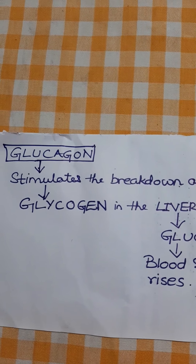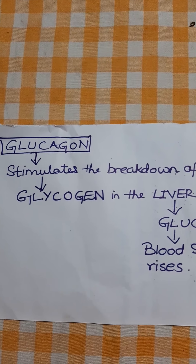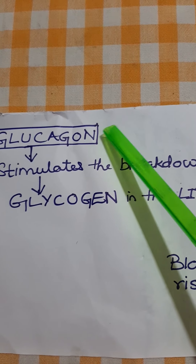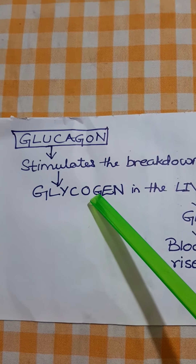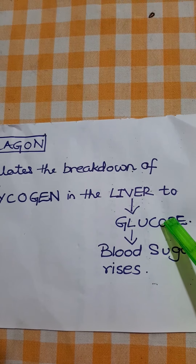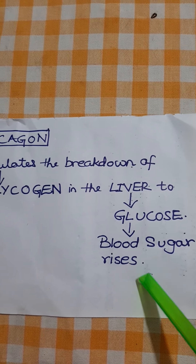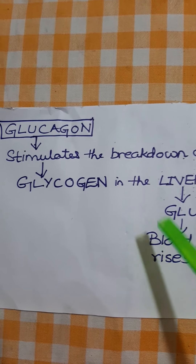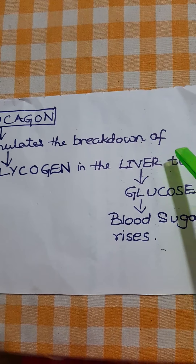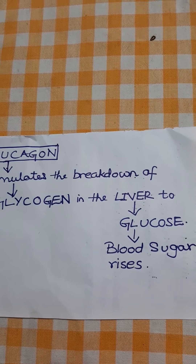The second hormone produced by the islets of Langerhans is glucagon. Glucagon stimulates the breakdown of glycogen in the liver and converts it into glucose. When this glucose enters the bloodstream, it raises the blood sugar level. In times of emergency when energy is needed, glucagon converts liver glycogen into glucose and raises blood sugar.